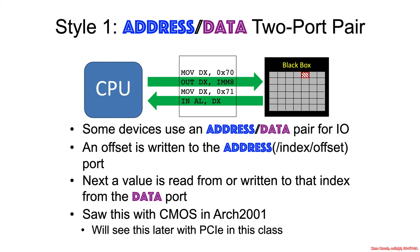Address/data style is the type that you saw in Architecture 2001 when we were dealing with the CMOS. This is the case where you've got the black box which is a port I/O peripheral, and there's one port that is used to specify an address somewhere inside of that black box, essentially treating it as if it was some sort of array or list of registers. One port specifies an address and the next port specifies the data, either being read from or written to the particular address that was specified.